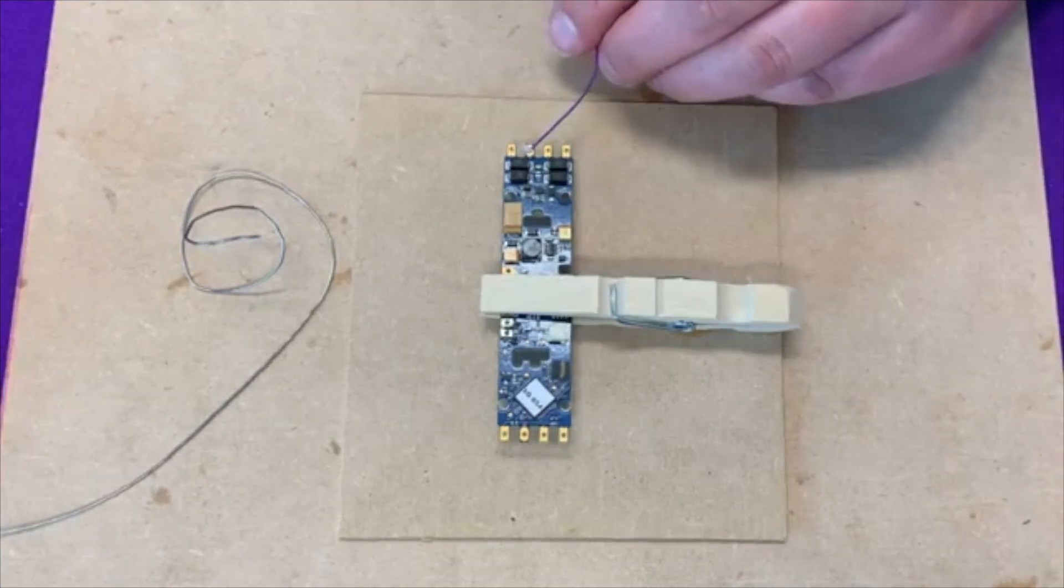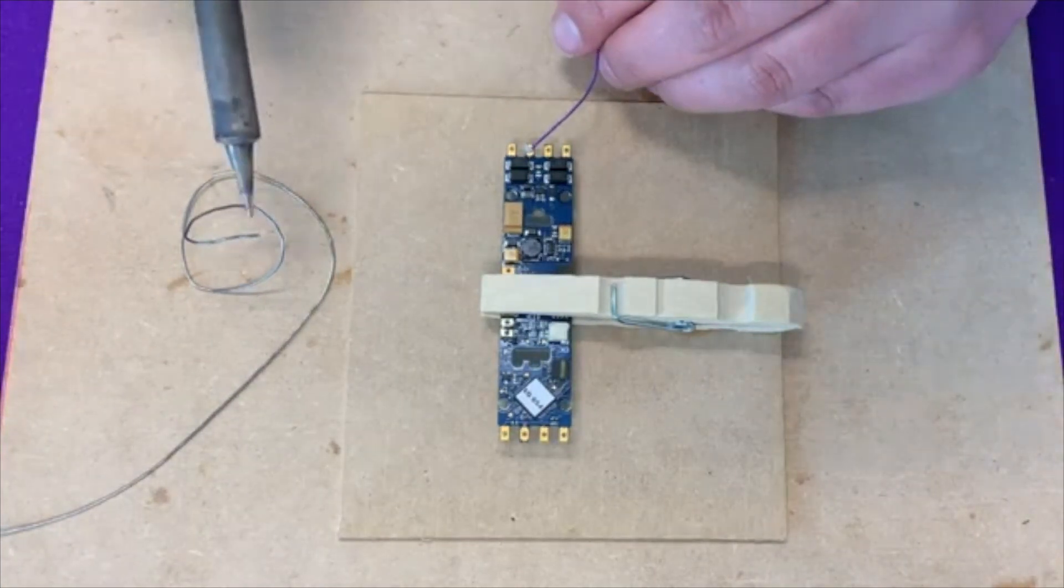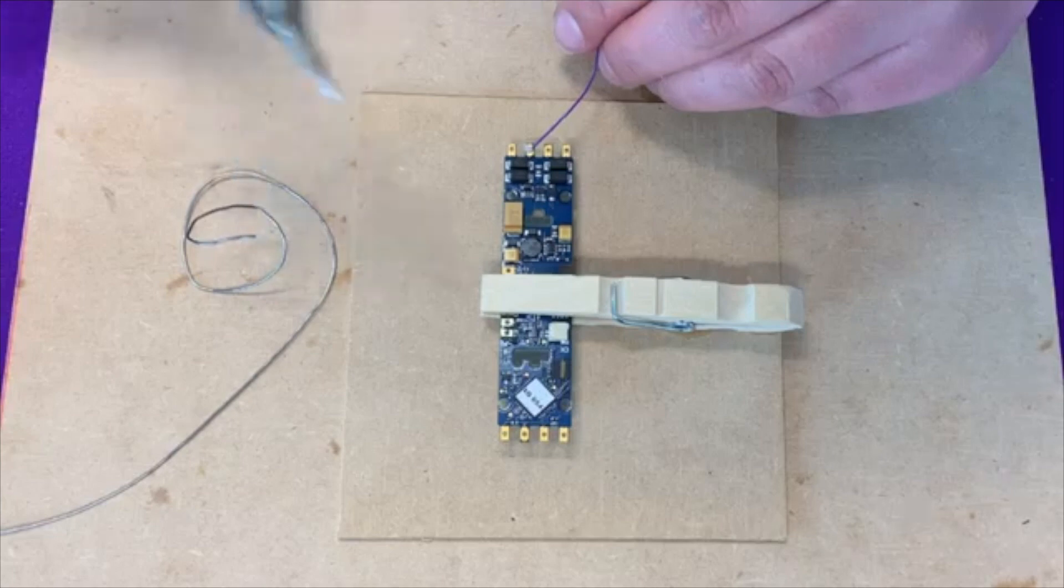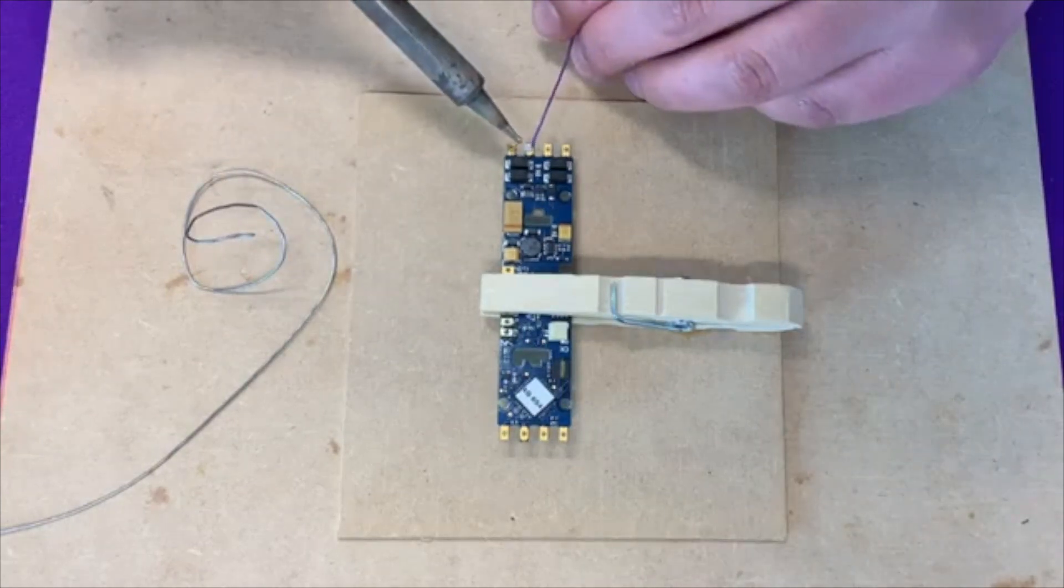We're going to just stick it through one of these holes here and apply some flux to the joint. Then we're going to get our soldering iron, clean the tip, get a little bit of solder, and hold it down to the joint for a couple seconds.